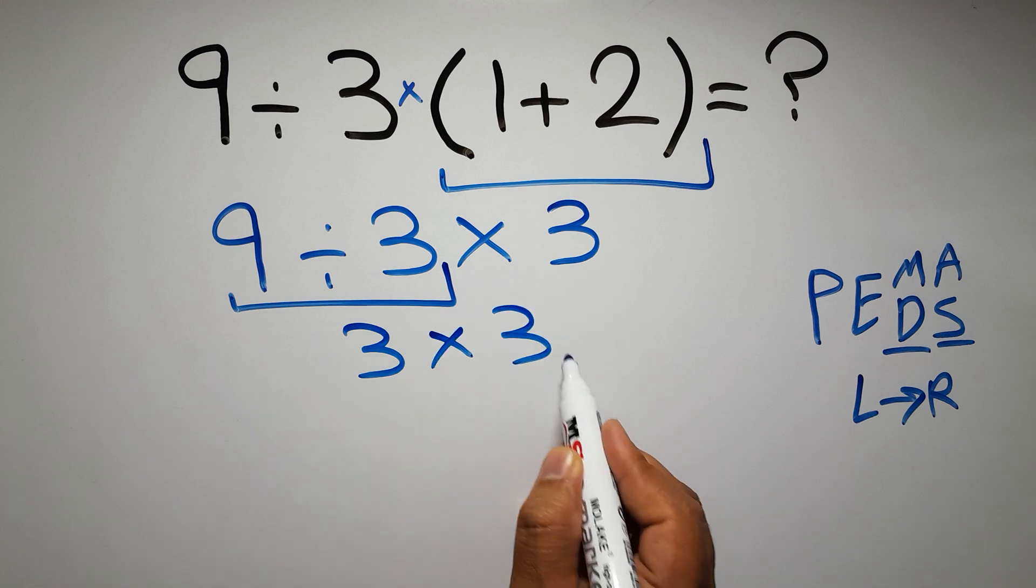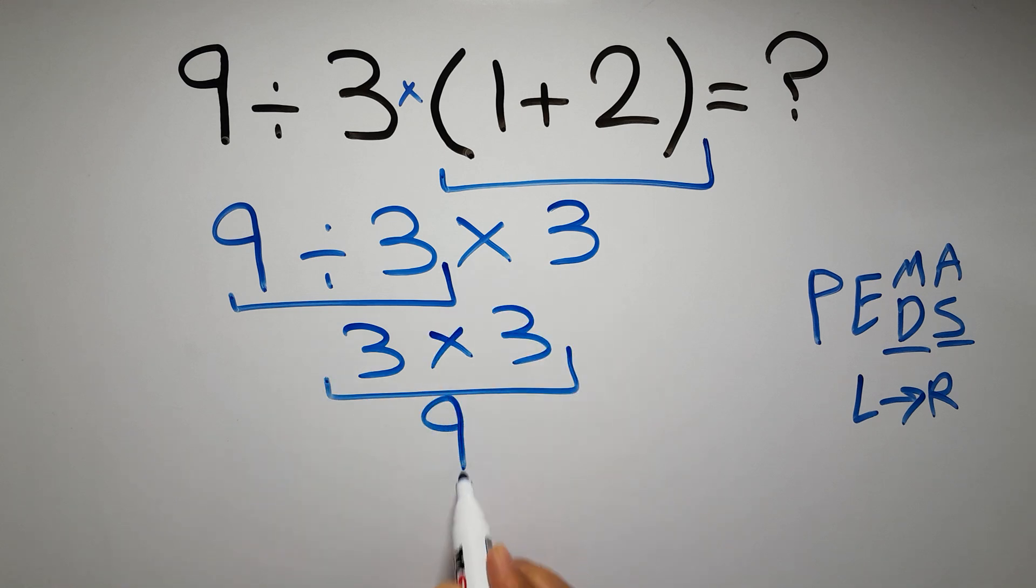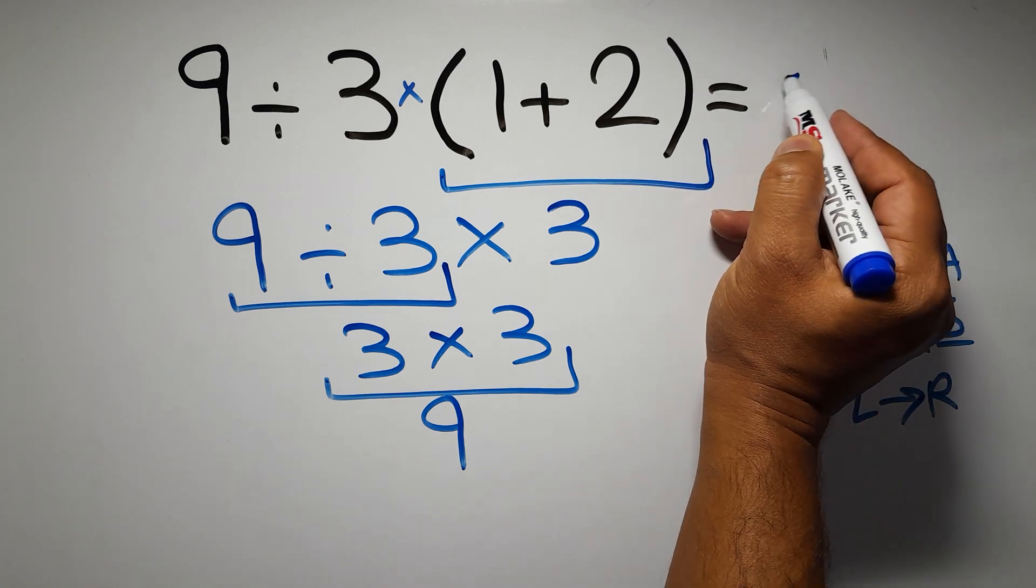three times three is just nine. And this is our final answer to this problem. The correct answer is nine, not one.